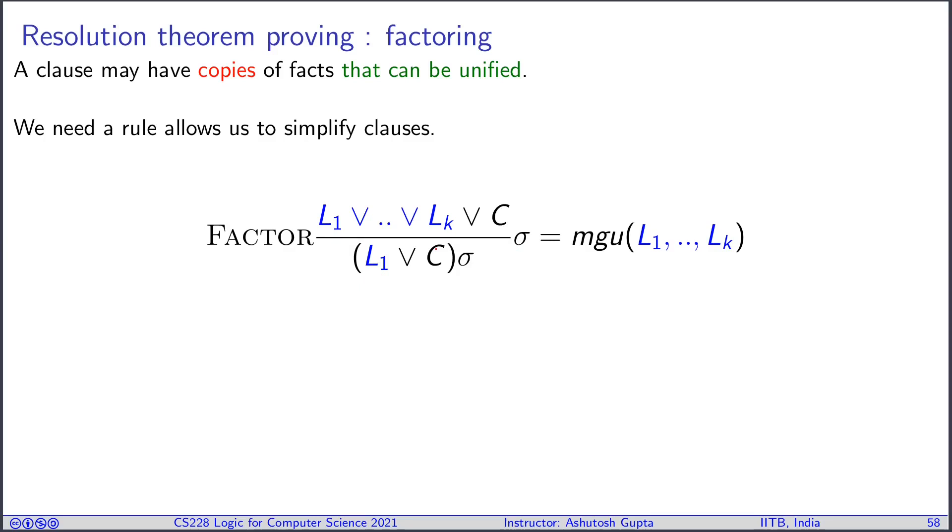You may be wondering why this is important. Let me give you an example. Suppose you have this clause P(X) or P(Y). This is for all X,Y, either P(X) or P(Y). You can easily see that actually implies that P is true on all X's, on all Y's. It is an uneconomical way of saying P is true on all X's.